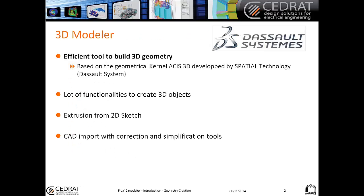What is the 3D modeler? The 3D modeler is an efficient tool to build 3D geometry. The modeler is based on the geometrical kernel ACIS 3D developed by Spatial Technology from Dassault Systèmes. We have lots of functionalities to create 3D objects.